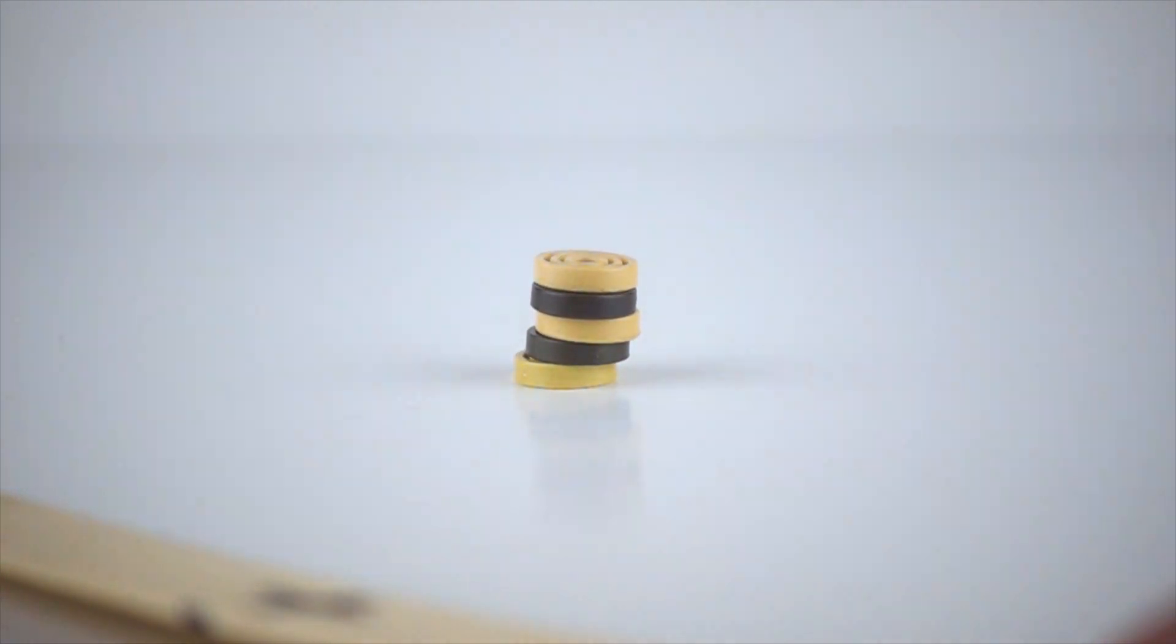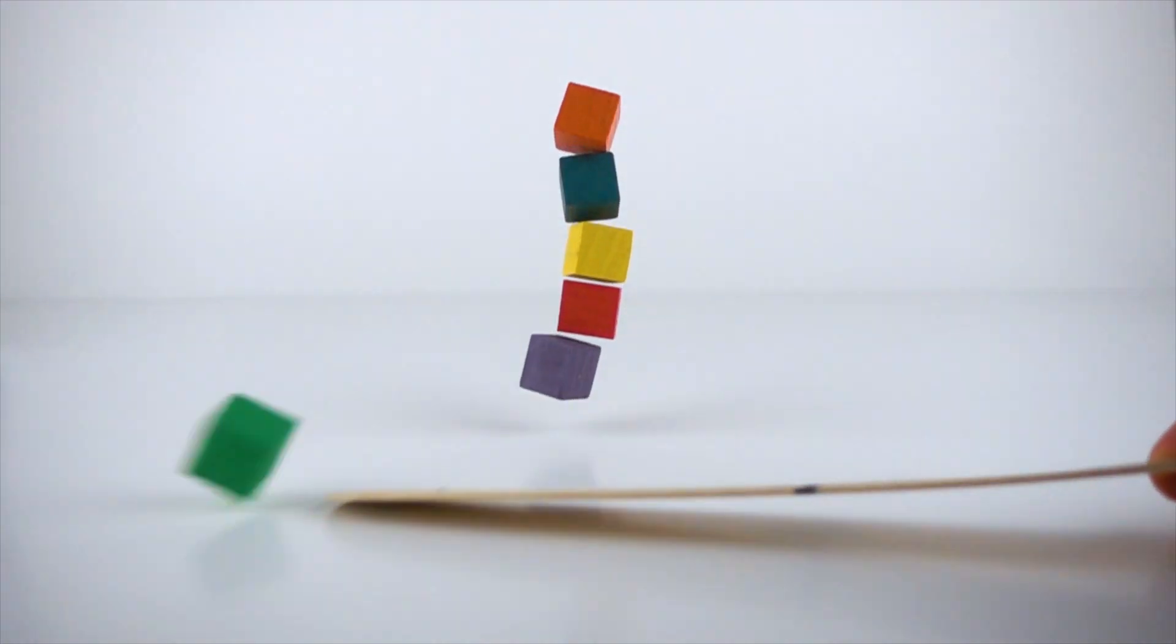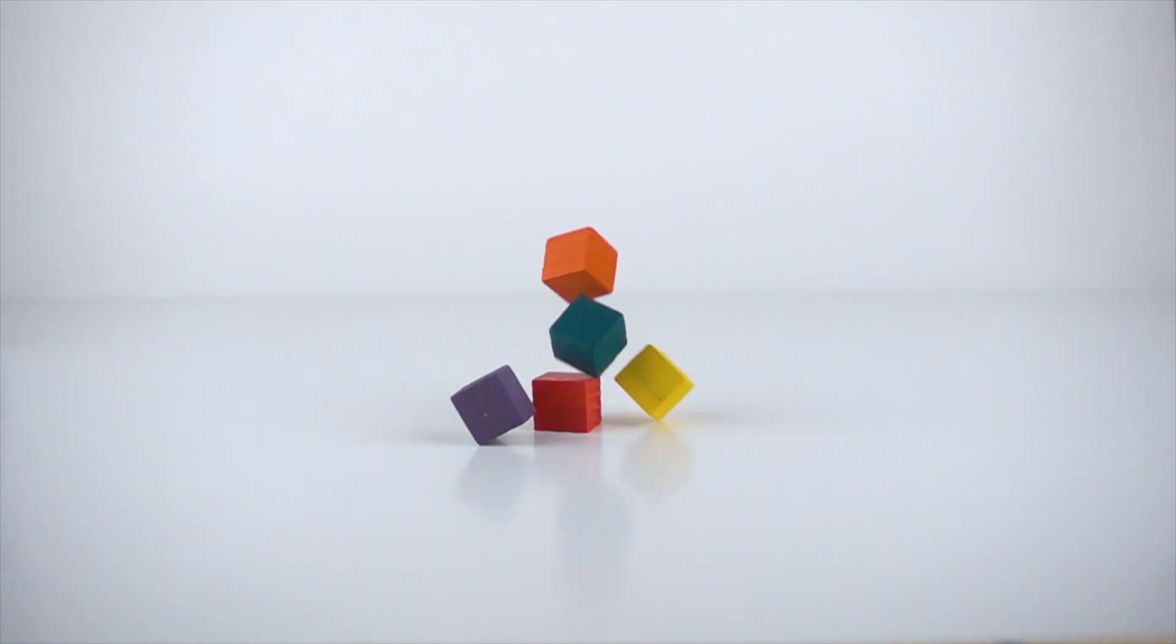If we look at the slow motion of the cubes falling, we can see that the cube tower seems to shatter on impact. With a slightly lower force, the tower tips over on the impact with the surface.